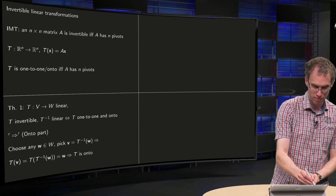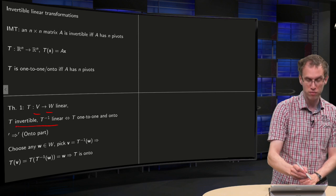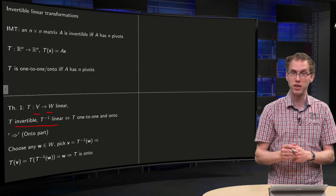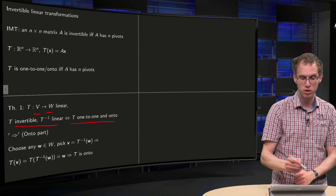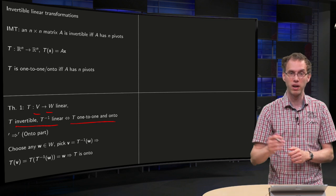You have T from V to W, linear, then we have that T is invertible and T inverse is a linear transformation if and only if T is 1-to-1 and onto. We'll sketch the proof. First from left to right, first the onto part.